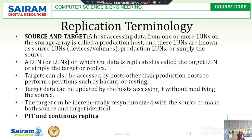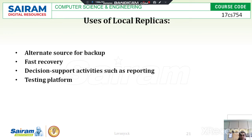Now, the uses of local replicas. A local replica acts at the local site — whatever operations or data we send or perform happen at the local site. The uses of local replicas are: alternate source for backup, fast recovery, decision support activities such as reporting, and testing platform. These are the four uses of local replicas.